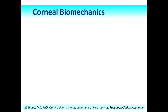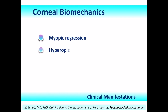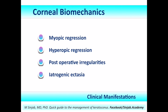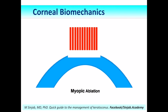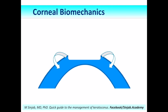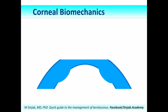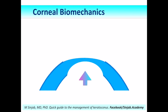After the corneal biomechanics concept appeared, some clinical manifestations could be understood, such as myopic regression, hyperopic regression, postoperative irregularities, and iatrogenic ectasia. In old profiles of myopic ablation, the laser was applied to the very central part of the cornea with an optical zone of about 5 to 5.5 millimeters and no clear transitional zone concept. This caused a sharp edge cut at the periphery, which forced collagen fibers at the edges to shrink and bulge into the anterior chamber, and under intraocular forces the central cornea bulged out, reducing the amount of myopic correction.